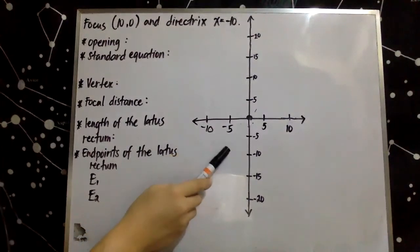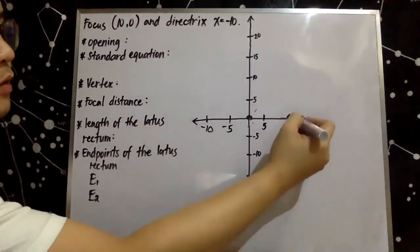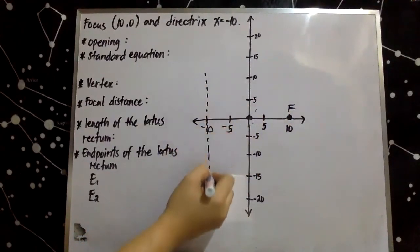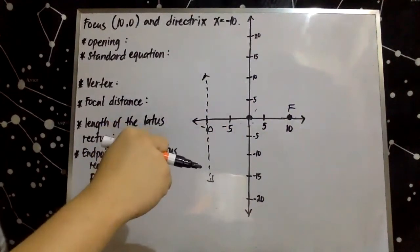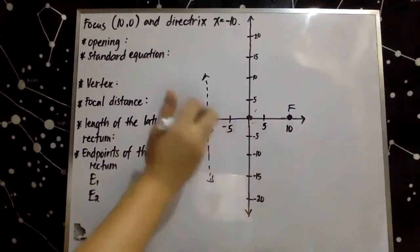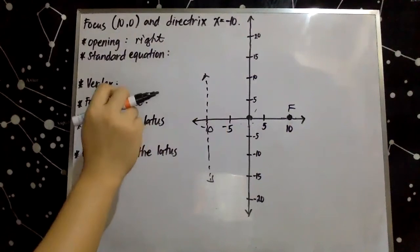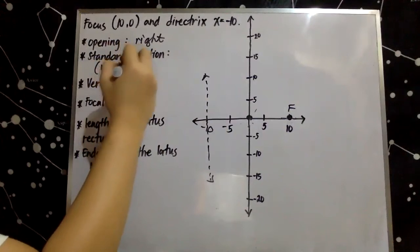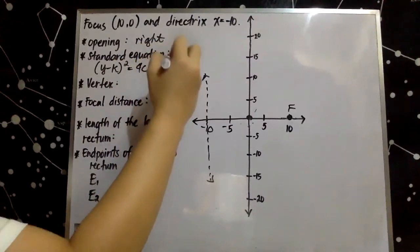This is for us to easily determine the opening of the parabola. The focus is located here based on the given, and the directrix is the line x equals negative 10. Since the focus is always located inside the parabola, it implies that our parabola opens to the right. The desired standard equation for this is y minus k, quantity squared, is equal to 4c times the quantity x minus h.